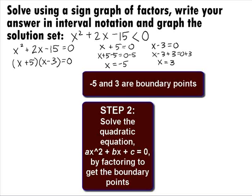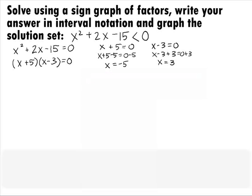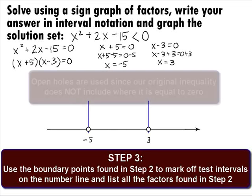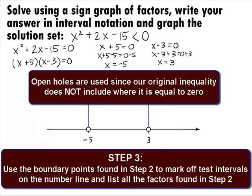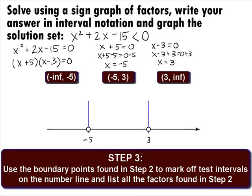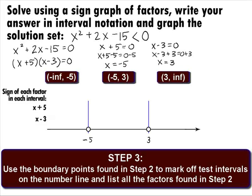So we have two boundary points: negative 5 and 3. In Step 3, we use the boundary points from Step 2 to mark off test intervals on the number line and list all the factors found in Step 2. We have marked off our boundary points of negative 5 and 3 using open holes at the two points because our original inequality did not include where it is equal to 0. Our boundary points mark off three sections on the graph: negative infinity to negative 5, negative 5 to 3, and 3 to infinity. We list the two factors, x plus 5 and x minus 3, on the side.